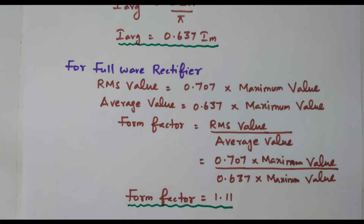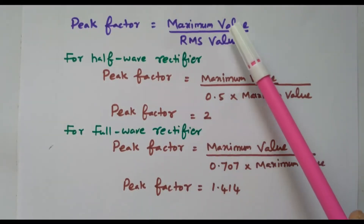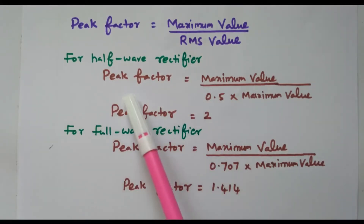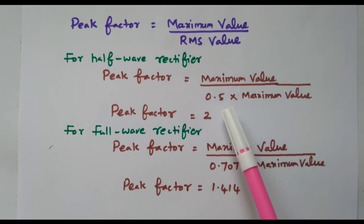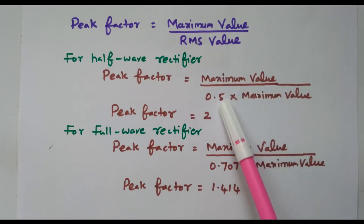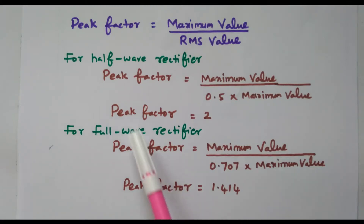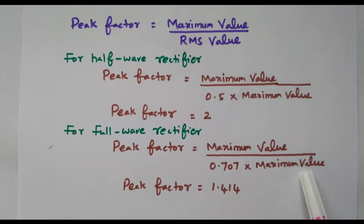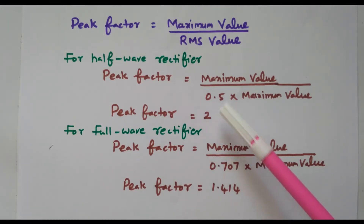One more factor is the peak factor, for both half wave and full wave rectifiers. Peak factor = maximum value / RMS value. For the half wave rectifier: peak factor = Im / (0.5·Im) = 1/0.5 = 2. For the full wave rectifier: peak factor = Im / (Im/√2) = √2 = 1.414.